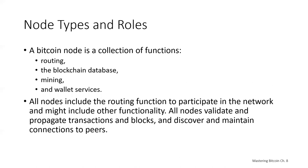Although nodes in the Bitcoin P2P network are equal, they can take on different roles depending on the functionality they're supporting. A Bitcoin node is a collection of functions: routing, the blockchain database, mining, and wallet services. All nodes include the routing function to participate in the network, and they might include other functionality. All nodes will be validating and propagating transactions and blocks, and discover and maintain connections to peers.